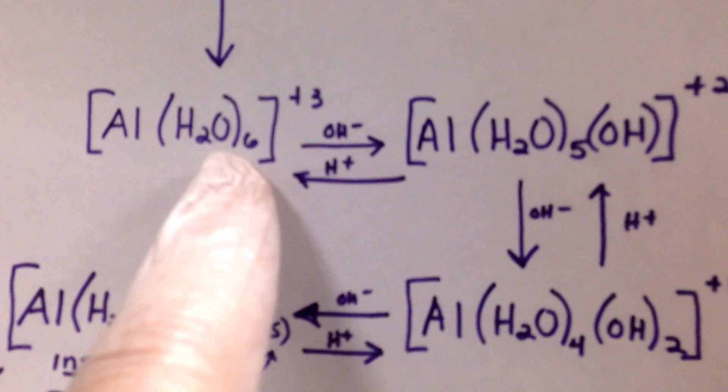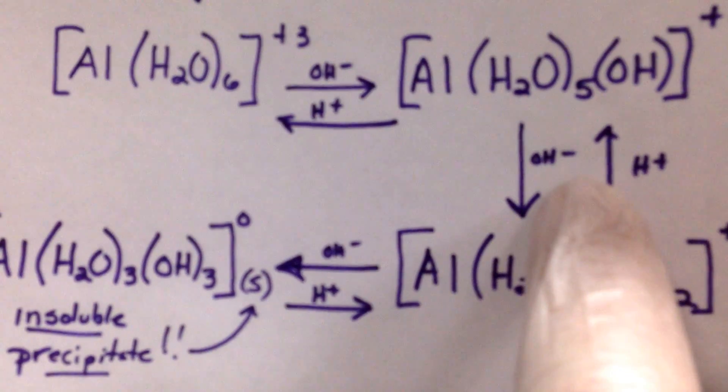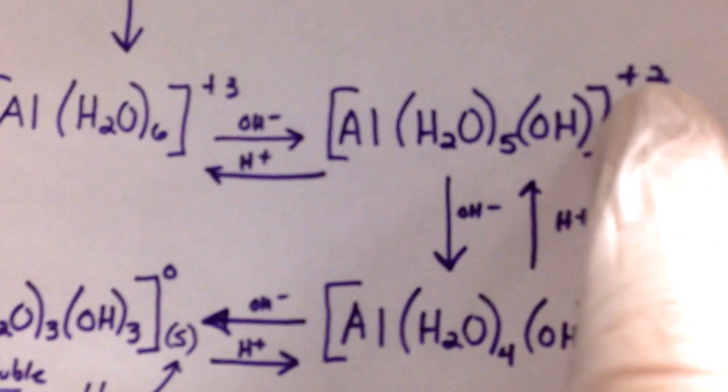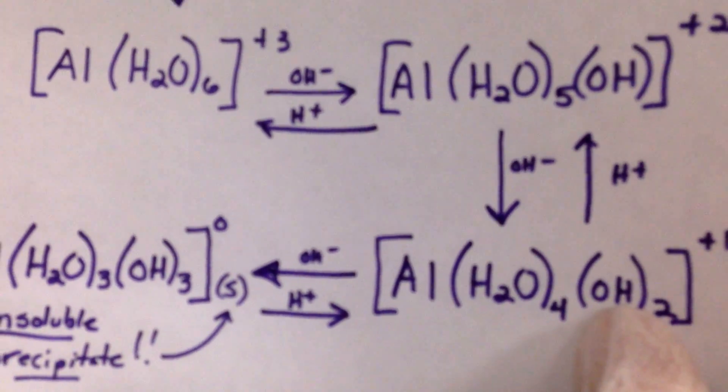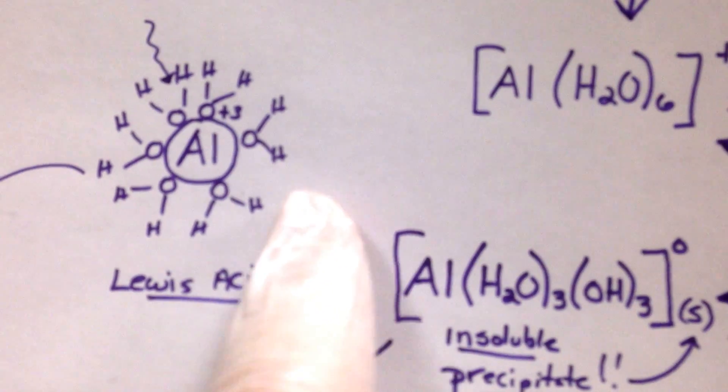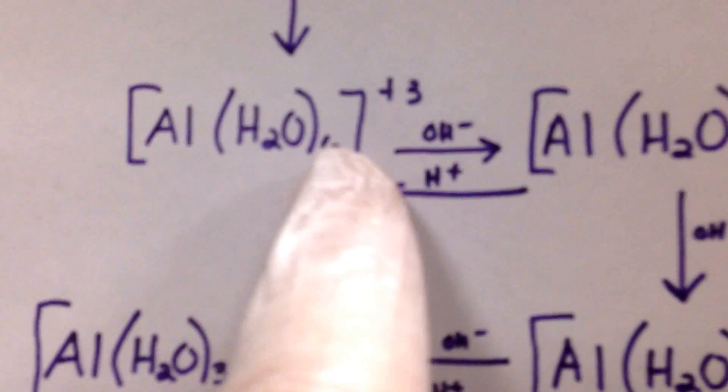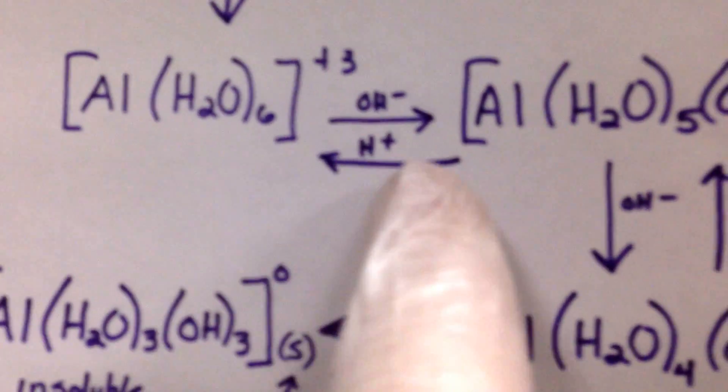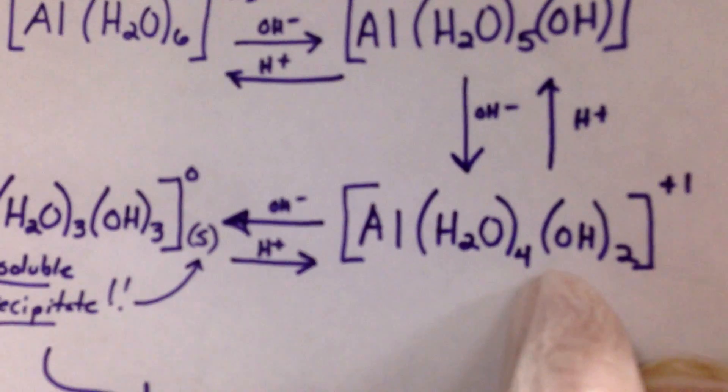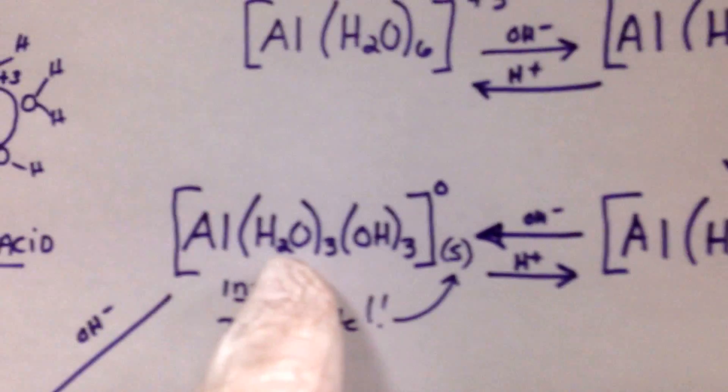By adding a base, I'm yanking an H away from the water, and now it becomes OH. As I add some more base, it becomes OH2. Notice the charge goes from plus two to plus one because we have two hydroxides now. As I pull H's off, we go from six waters to five and a hydroxide, then four and two hydroxides, and then three hydroxides and three waters.